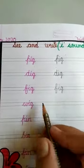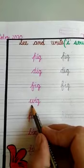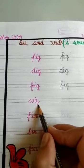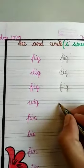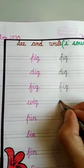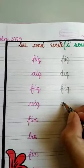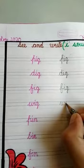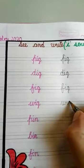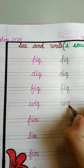Next word is wa, ig — vig. Write here: wa, ig, vig.